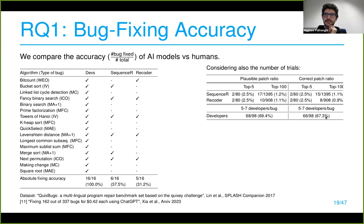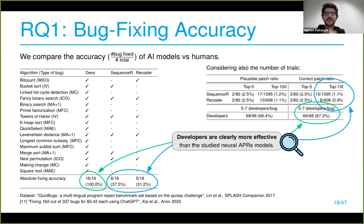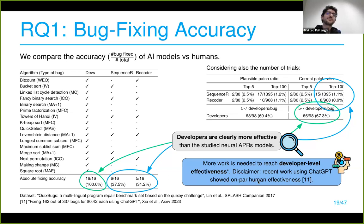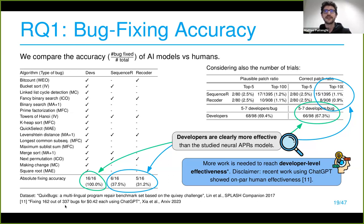The summary is that developers are clearly more effective than current automatic program repair tools, so more work is needed to reach developer-level effectiveness. However, a small disclaimer: recent work using ChatGPT seems to be achieving above-human effectiveness on this small dataset, possibly due to data contamination. At least it seems that pre-trained LLMs are getting much better than what was benchmarked here about a year and a half ago.